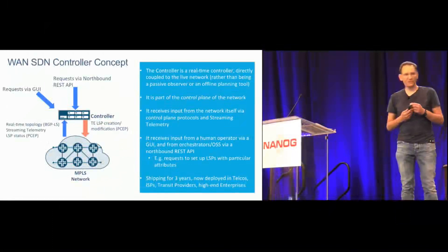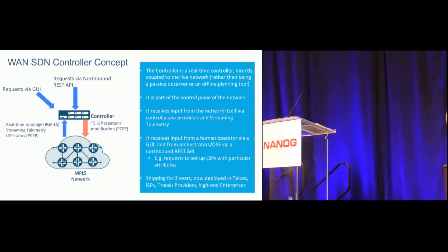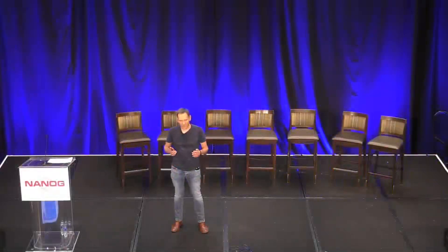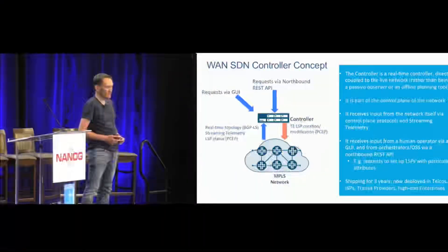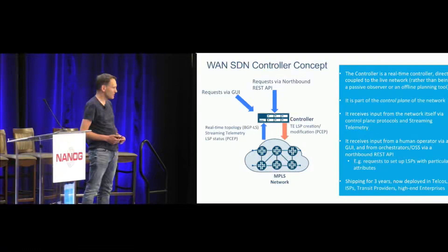Here's the concept behind this type of controller. The key point is that it's a live controller directly coupled to the production network, as opposed to being an offline planning tool or a passive monitoring tool. It takes part in some of the control plane protocols of the network, giving it very strong coupling with the network itself. It receives inputs from three main sources, shown by those blue arrows.